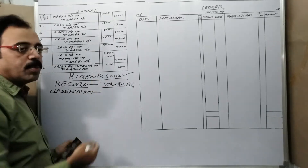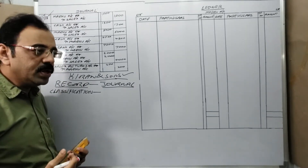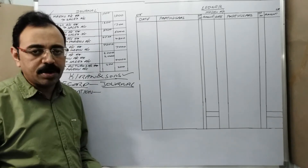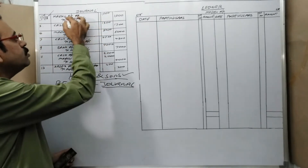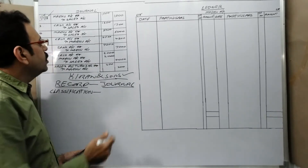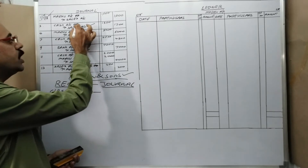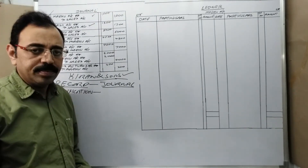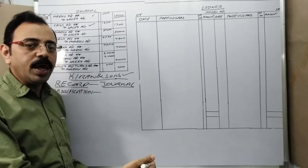Here is one example. In January 2018, between the firm and Madhu, there were some transactions. Madhu is our customer. On 1st January, the firm sold goods to Madhu. The entry is: Madhu account debit to sales account. In the journal lesson I explained all these entries. On 3rd, we sold goods to Madhu on cash - cash account debit to sales account. In the first entry, the firm sold goods to Madhu on credit, so Madhu is liable to us for 1000 rupees.